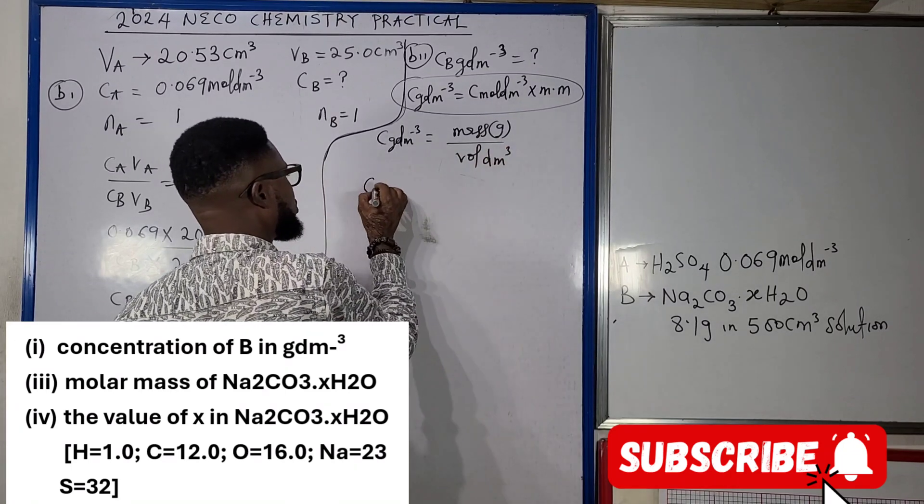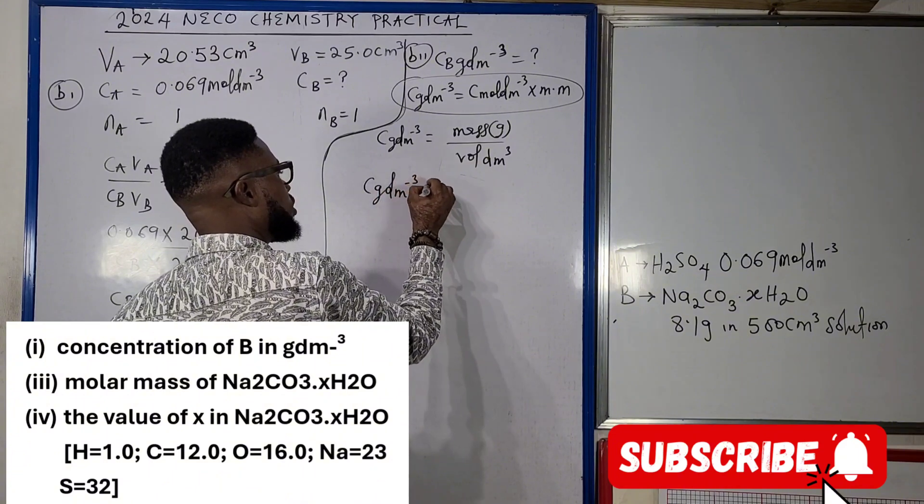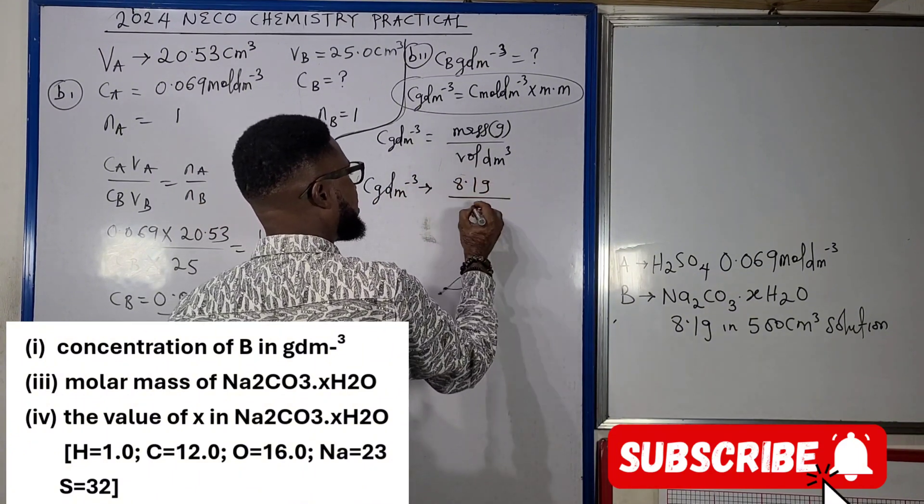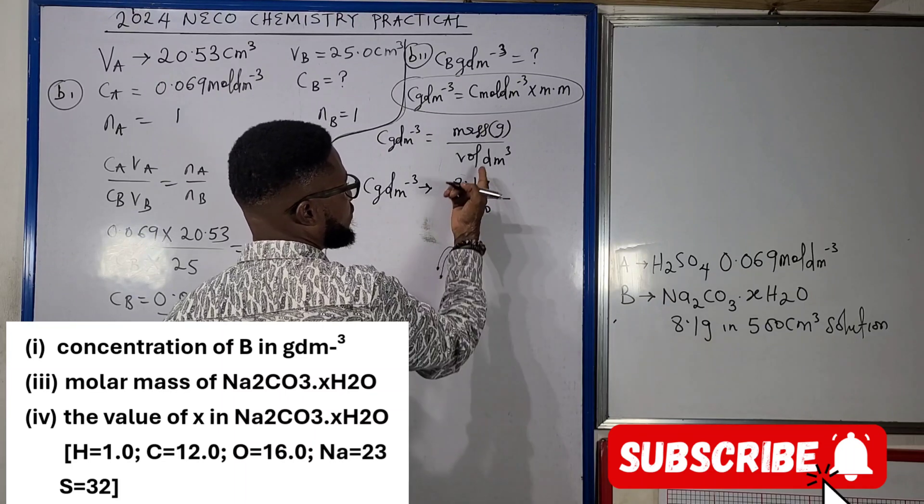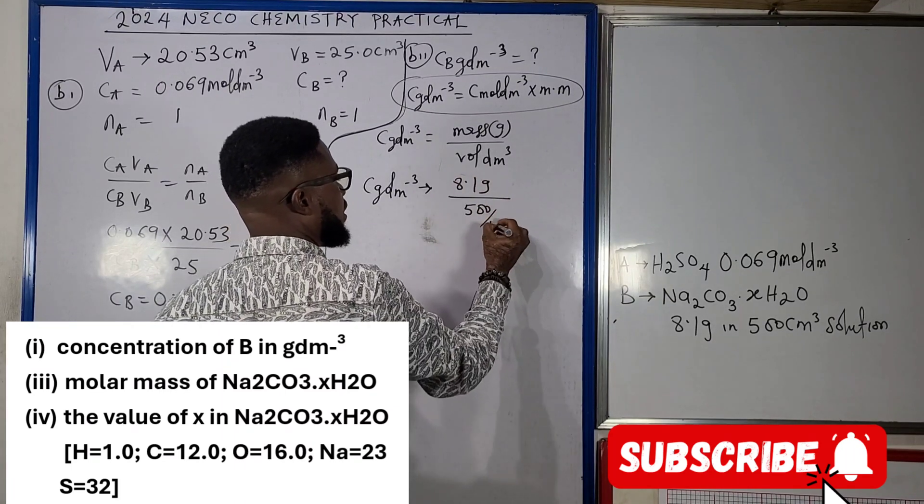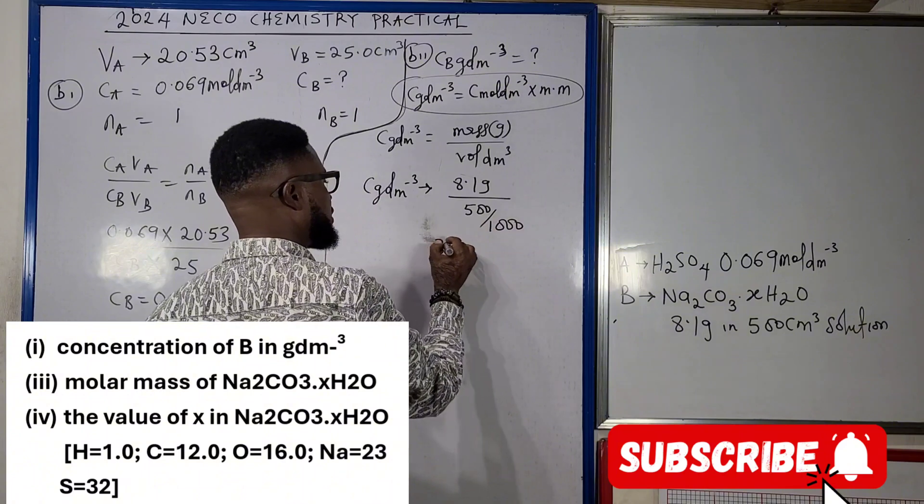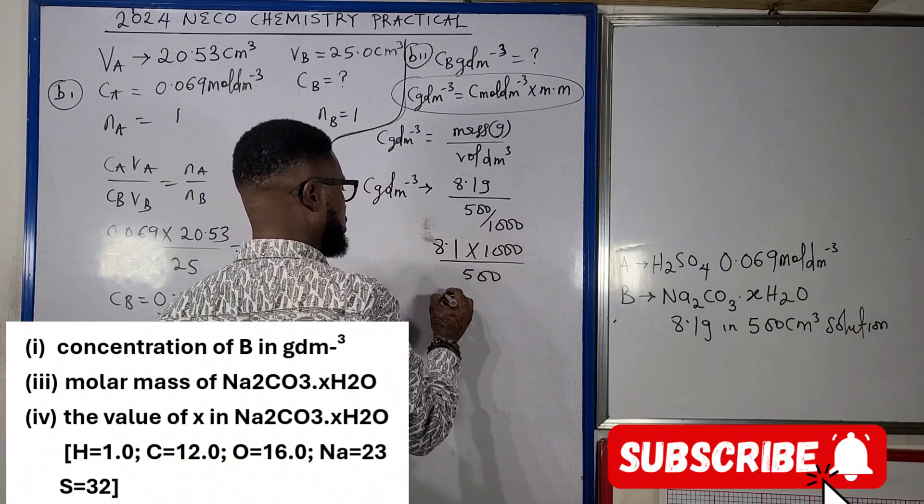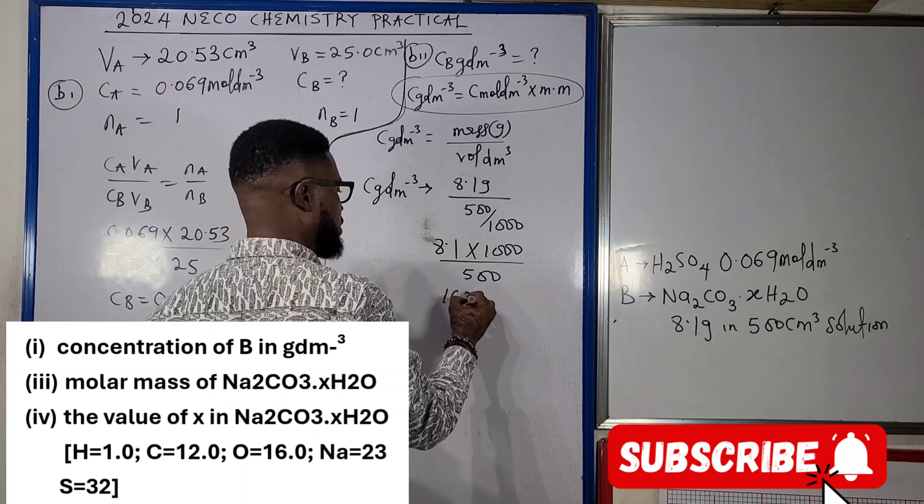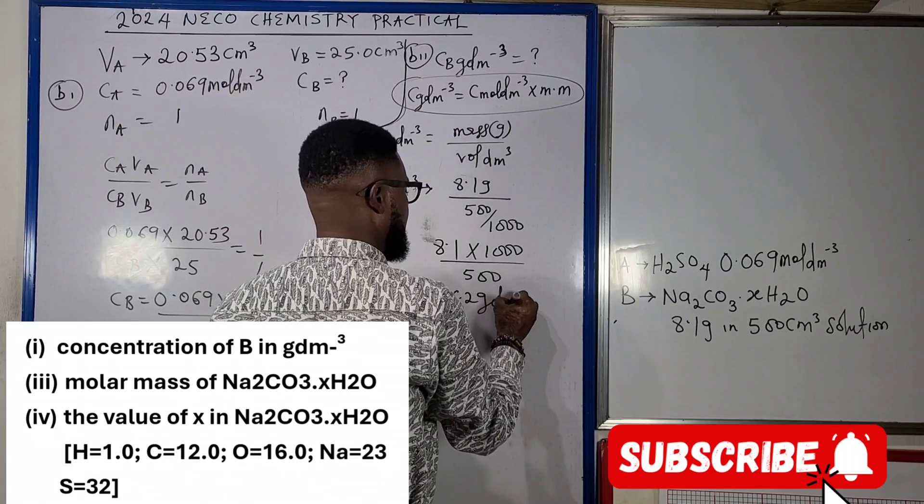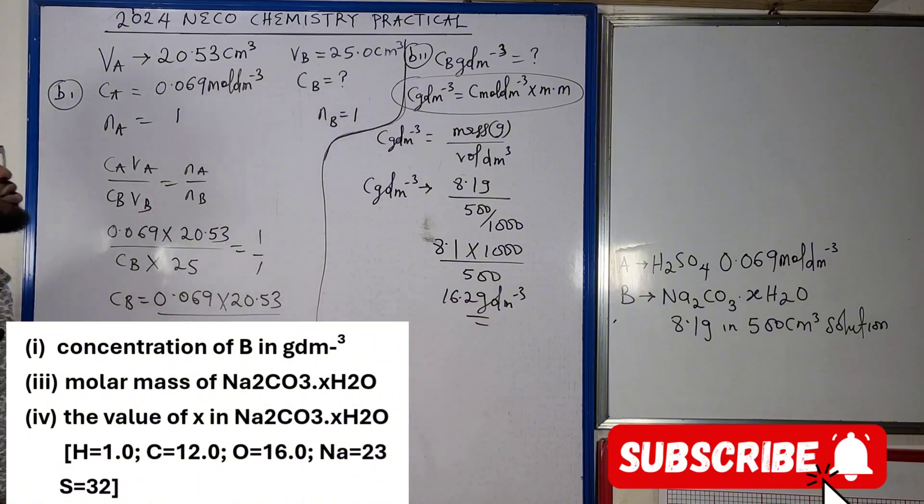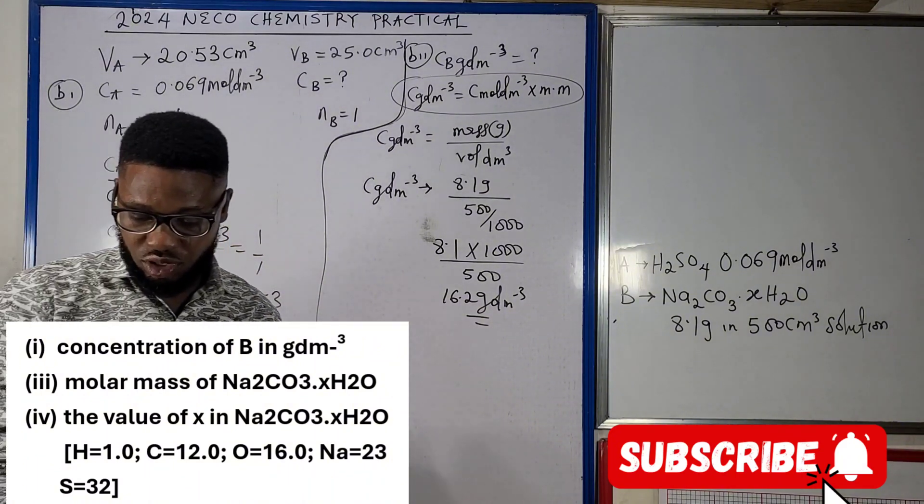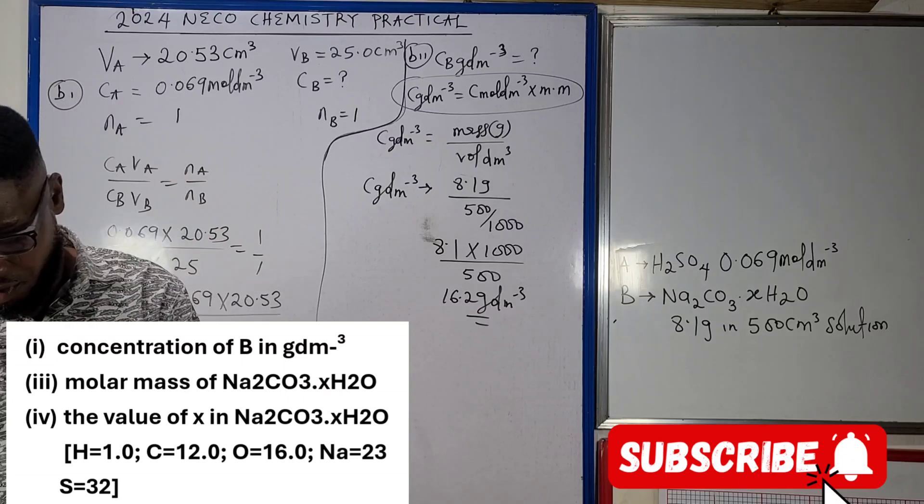In this case, concentration in gram per dm cube will mean 8.1 gram in 500 cm cube, so we have to convert the volume to dm cube, divided by 1000. So that means 8.1 times 1000 divided by 500. The implication of this is that CB is going to be 16.2 gram per dm cube. That is the mass concentration, CB in gram per dm cube.